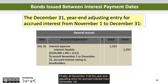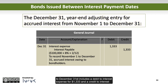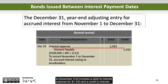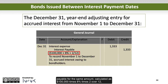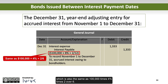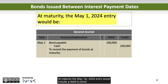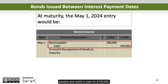Finally, at December 31, the year-end adjusting entry for accrued interest from November 1 to December 31 includes a debit to interest expense for $1,333 and a credit to interest payable for the same amount, calculated as $100,000 times 8% times 2/12, which is also the same as $100,000 times 4% times 2/6. At maturity, the May 1, 2024 entry would include a debit to bonds payable and a credit to cash for $100,000.